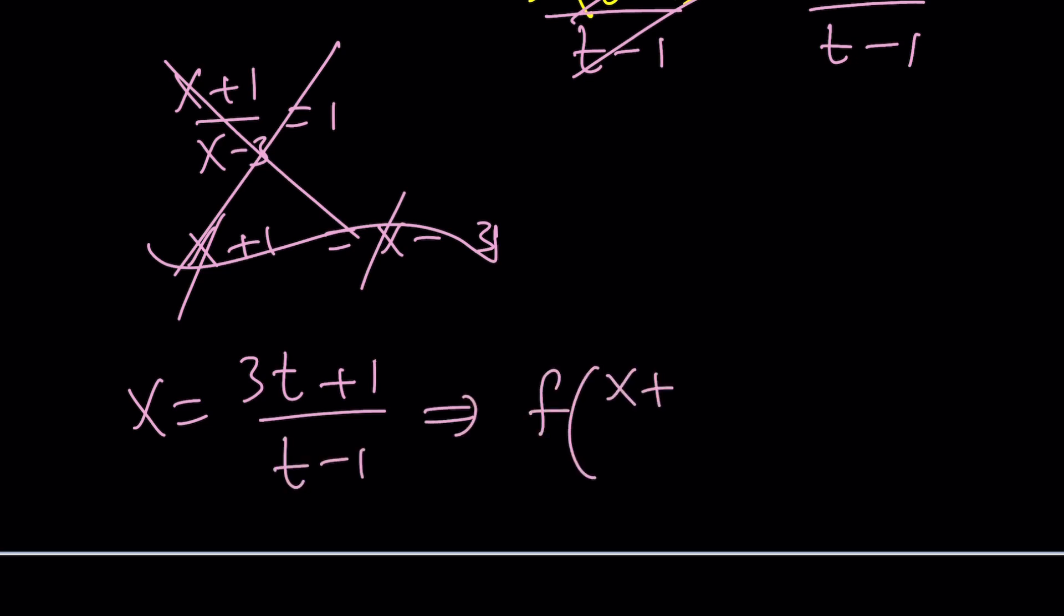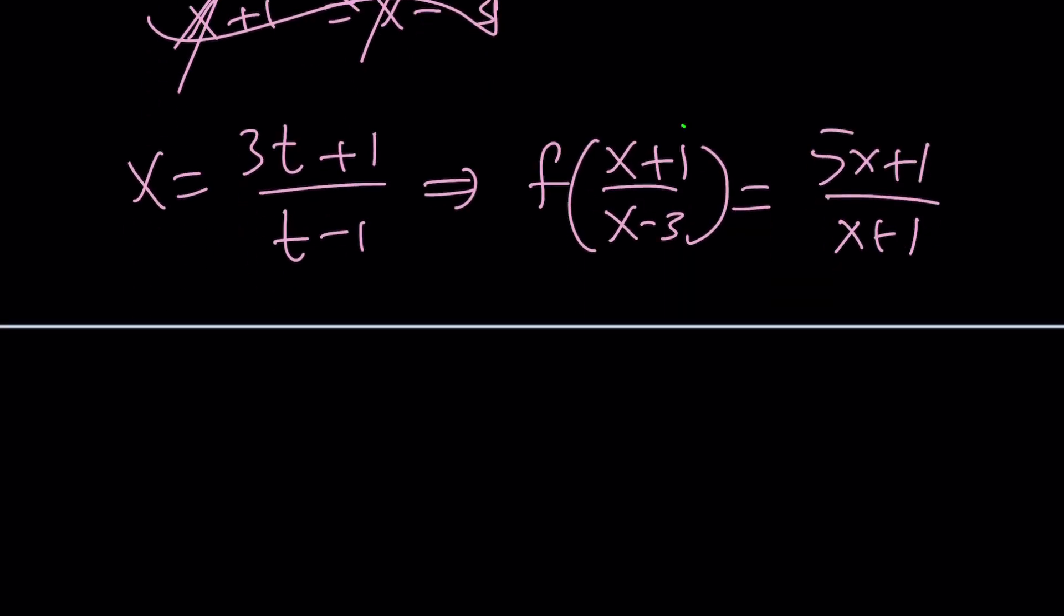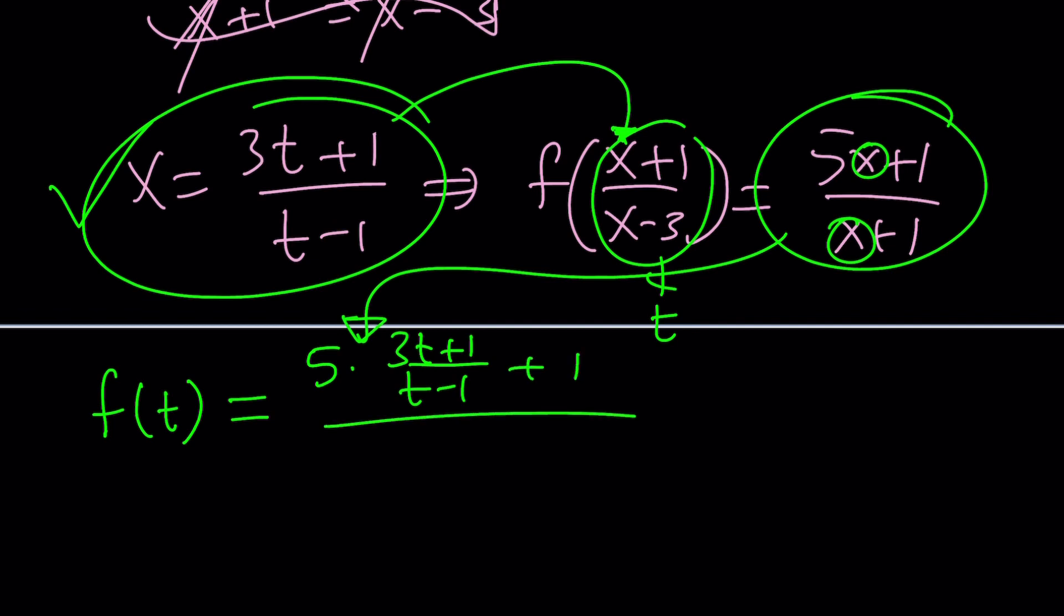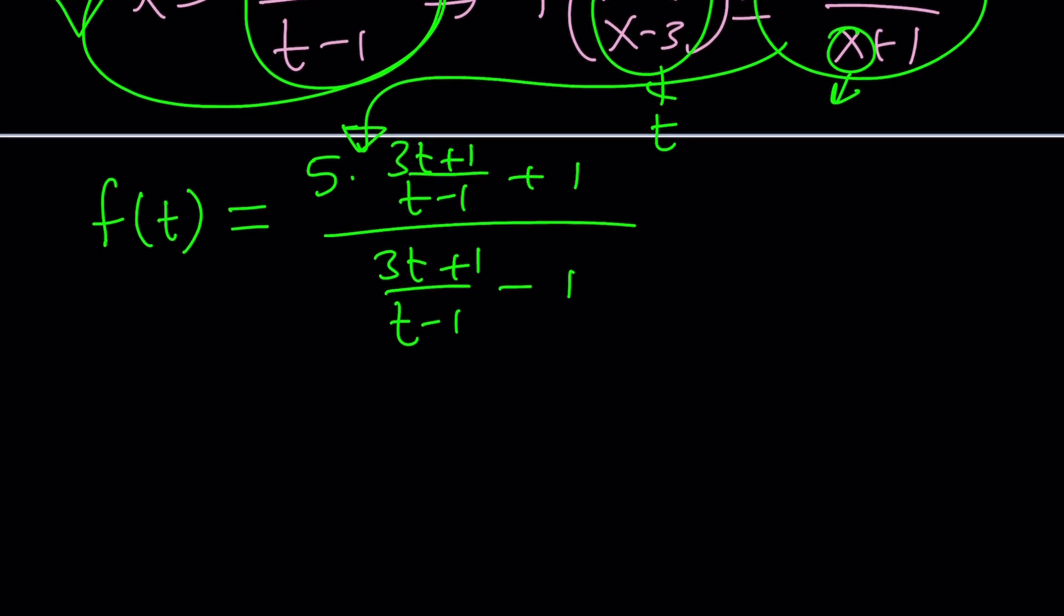And remember, our expression was f of (x+1)/(x-3) equals (5x+1)/(x+1). Now, when we did set this equal to t, we got that. If you substitute that for x, you can do it, but I'm not going to do it because I know that I'm going to be getting t from there. You can just confirm it by substitution, which is a good thing because if you made a mistake, then you won't get a t there. So, now I need to do it on the right-hand side. So, replace x with this on the right-hand side. Bring it in.